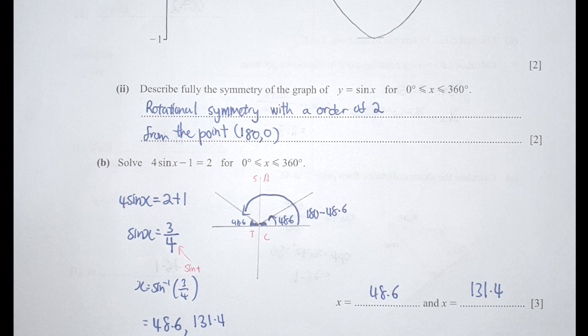For part B, quadrant calculation is required. Shifting the negative 1 gives sine X equals 3 over 4. Then X equals sine inverse of 3 over 4, giving 48.6 degrees from the calculator. However, the range is 0 to 360, and since sine is positive in the first and second quadrant, we also take 180 minus 48.6 to get 131.4 degrees.